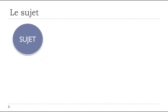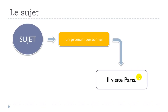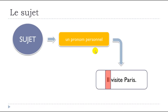Le sujet peut être un pronom personnel — so it can also be a subject pronoun. A simple sentence: Il visite Paris. Il here is the subject pronoun. Visite comes from the verb visiter, conjugated. Il visite Paris — you can see quite easily that il is the subject of the sentence, and it's what we call un pronom personnel.